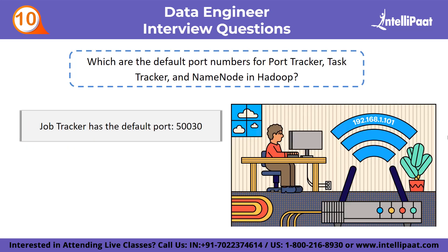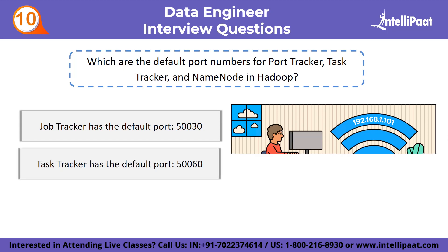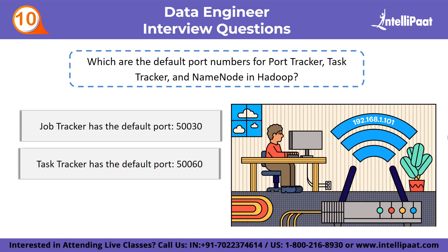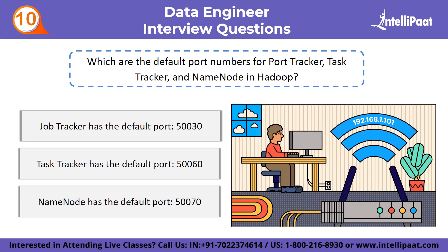Tenth question: which are the default port numbers for job tracker, task tracker, and name node in Hadoop? Job tracker has the default port 50030. Task tracker has the default port 50060. And name node has the default port 50070.